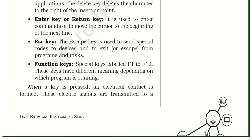The Function keys — we have 12 function keys, F1 to F12. These keys perform different work depending on which type of program is running. F1 and F2 have different functions; each function key has a different purpose.